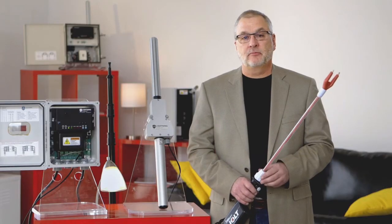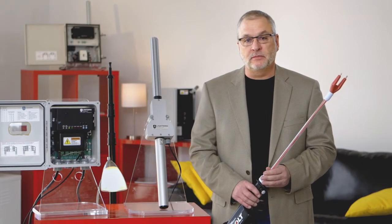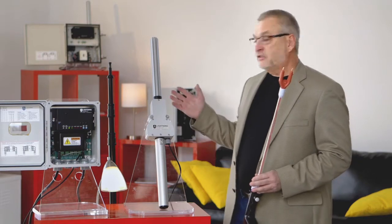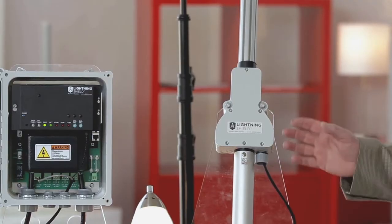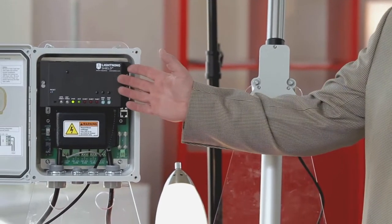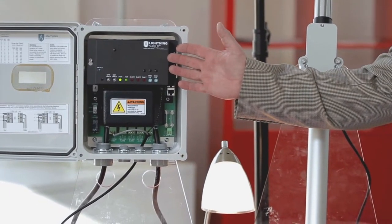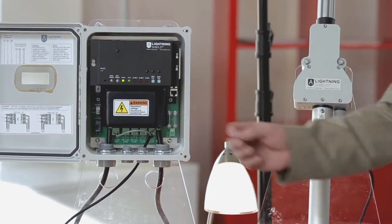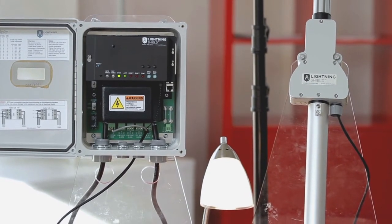When it comes to detecting a pending lightning strike, there's two components to Lightning Shield. Number one, we have the detector here. It sends a signal down a fiber optic cable into this control module, which then will open a contactor, and that contactor will isolate your sensitive equipment from lightning damage.